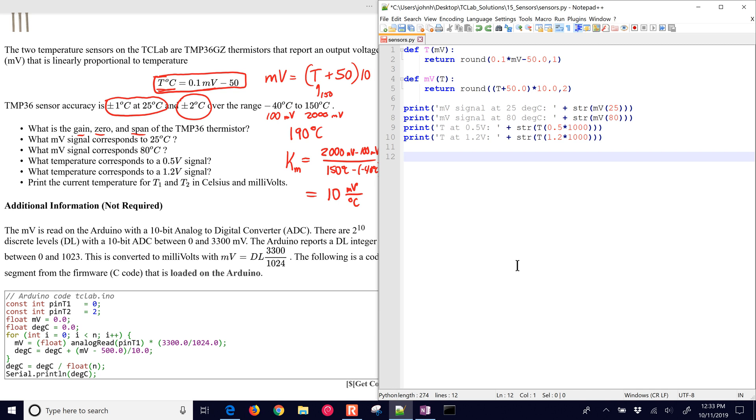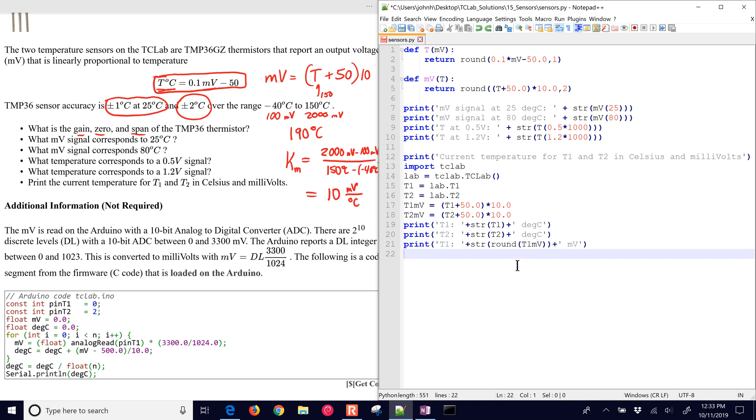Now let's do the final one: print the current temperature for T1 and T2 in Celsius and millivolts. Let's import TCLAB. We'll connect to it. We'll get our T1 and T2. And we'll also get our millivolts. And there is temperature 1 in degrees Celsius, temperature 2 in degrees Celsius, and then there's millivolts and millivolts. And then we'll close the lab.